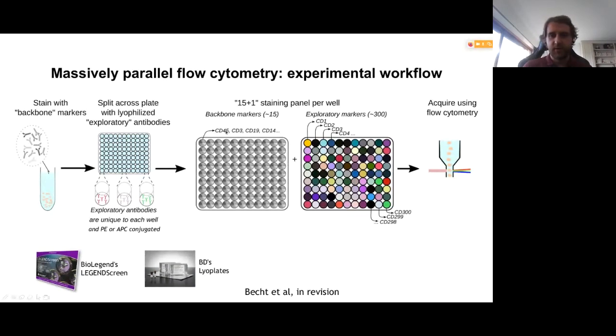So in terms of staining patterns, what you obtain is that your backbone panel is staining every cell in every well. Here you typically want to use well-characterized markers in your backbone panel because these will let you define cell populations. And then you have these exploratory antibodies that are unique to each well. You have CD1 in the first well, CD2 in the second, CD3 in the third, all the way to CD300, schematically speaking.